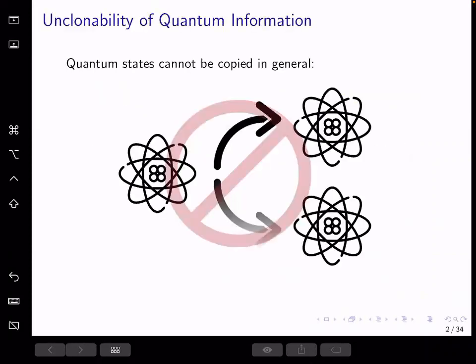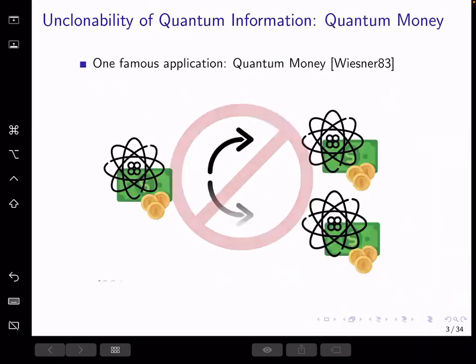As we know, quantum no-cloning principle does not allow us to copy an arbitrary quantum state. And this property leads to some applications in quantum cryptography.